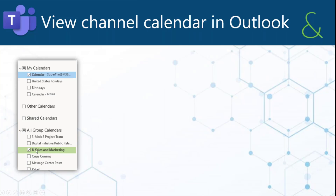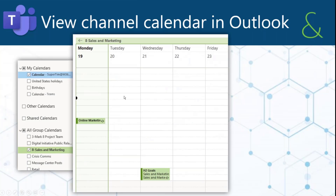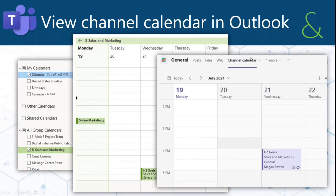Here's that sales and marketing calendar. This is what it would look like in Outlook. And then this is that same calendar — I just created a channel calendar — and this is what it would look like in Teams.